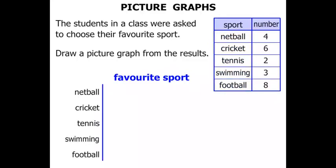Now let's start with netball. There were four people who chose netball. So we're drawing a picture graph. To represent four, we're going to go one, two, three, four — four smiley faces.